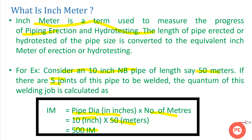There is a very minor difference between inch dia and inch meter. Whenever we talk about fabrication job in piping, we use the term inch dia. But whenever we are calculating how much erection has been done — how much pipe has been laid on pipe racks or underground — that is calculated by inch meter.